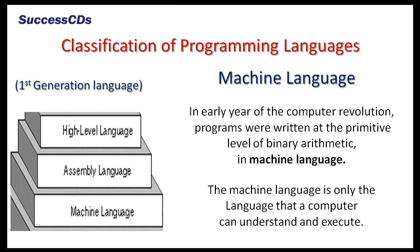Classification of programming languages. First, machine language, which is also known as first generation language. In the early years of the computer revolution, programs were written at the primitive level of binary arithmetic, in machine language. Machine language was tedious, error-prone and machine-dependent — programs written on one type of machine could not be executed on other types of machine without rewriting all the code. However, machine language is the only language that a computer can understand and execute, and hence programs written in all other programming languages must first be converted or translated into machine language before they can be executed.